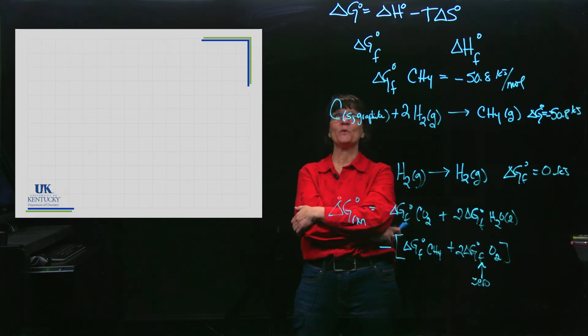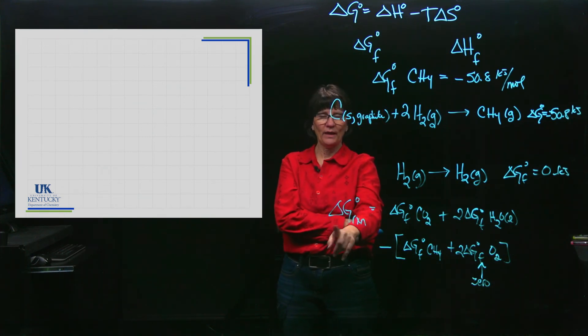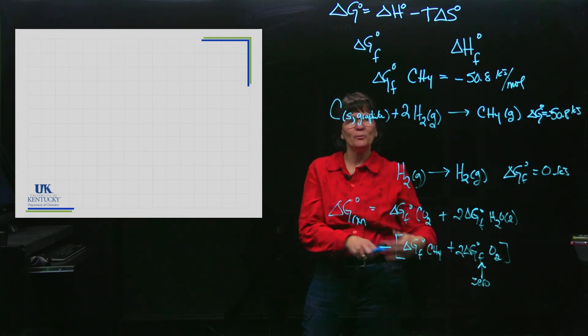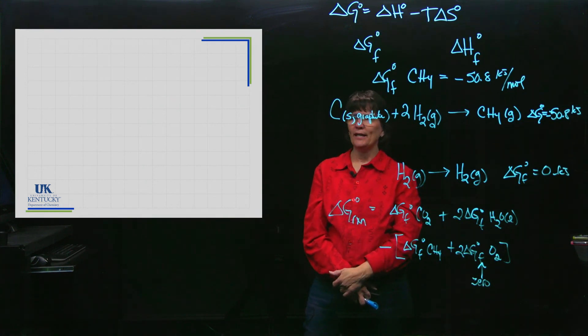We have our means by which we can calculate Delta G. We can calculate it using Delta H minus T Delta S, we can calculate it using the summation, we might use a similar process as Hess's law, and we're going to find out some other ways, but not yet.